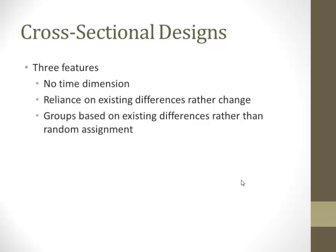Turning to the first slide, there are three features of cross-sectional designs. First, there's no time dimension — all of our measurement occurs at one period in time. This makes it very difficult to sort out temporal precedence issues. We're also relying on existing differences rather than change, looking at differences between units as a way to point out some type of relationship, rather than looking at how something changes over time or in response to a specific treatment in a randomized experiment.